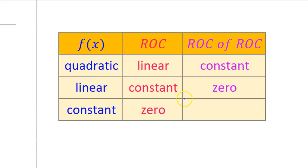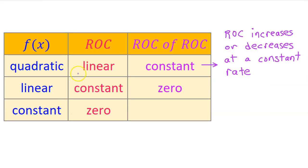Memorize this chart so you can write it on a piece of scratch paper at the beginning of your next test or quiz. A function will be linear if the rate of change is constant, and a function will be quadratic if the rate of change of the rate of change is constant — in other words, if the rate of change increases or decreases at a constant rate.